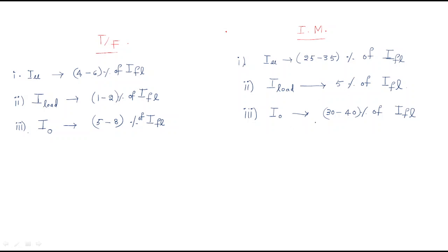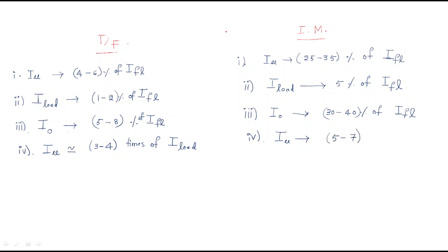The fourth point gives the relation between magnetizing current and load current. For the transformer, the magnetizing current is approximately 3 to 4 times the load current. For the induction motor, the magnetizing current is 5 to 7 times the load current — the magnetizing current is heavily dominant.